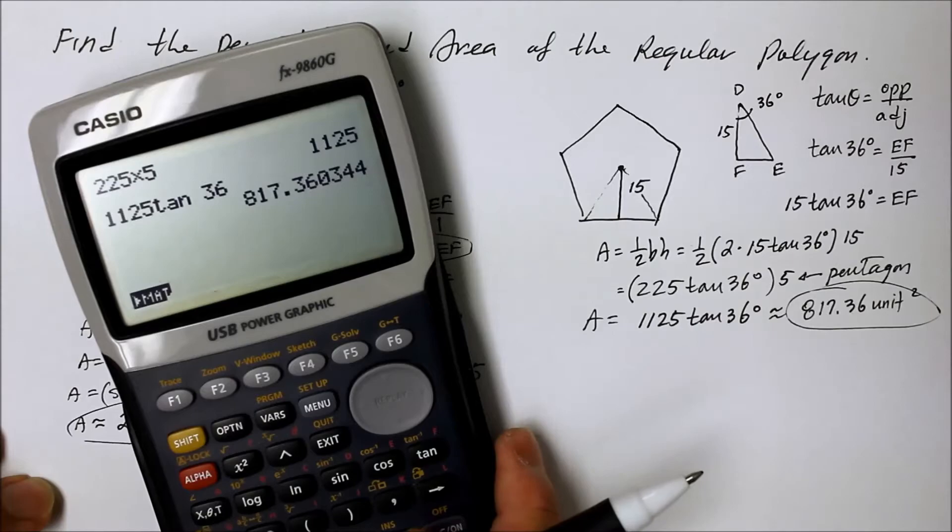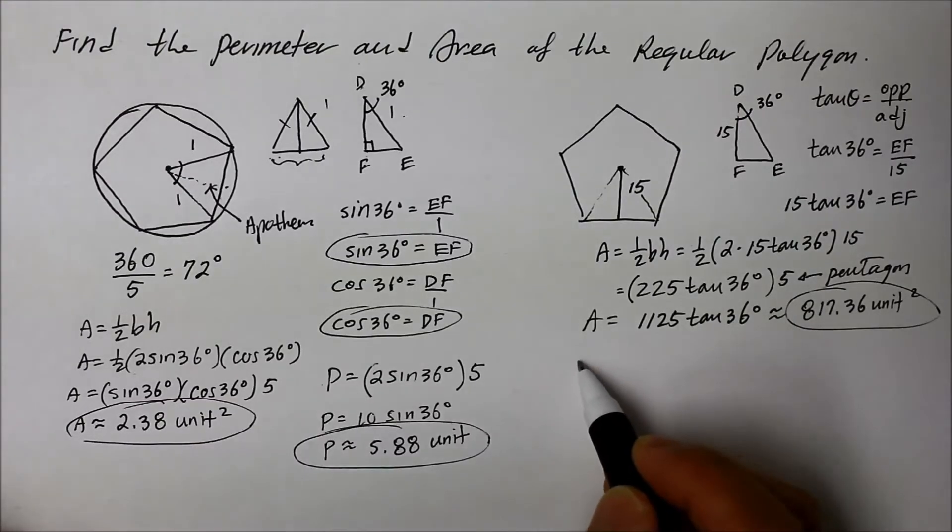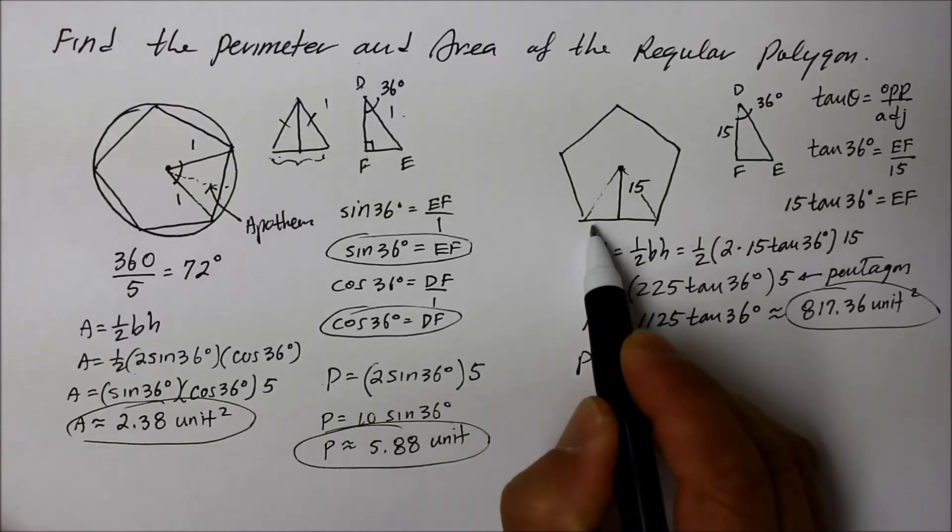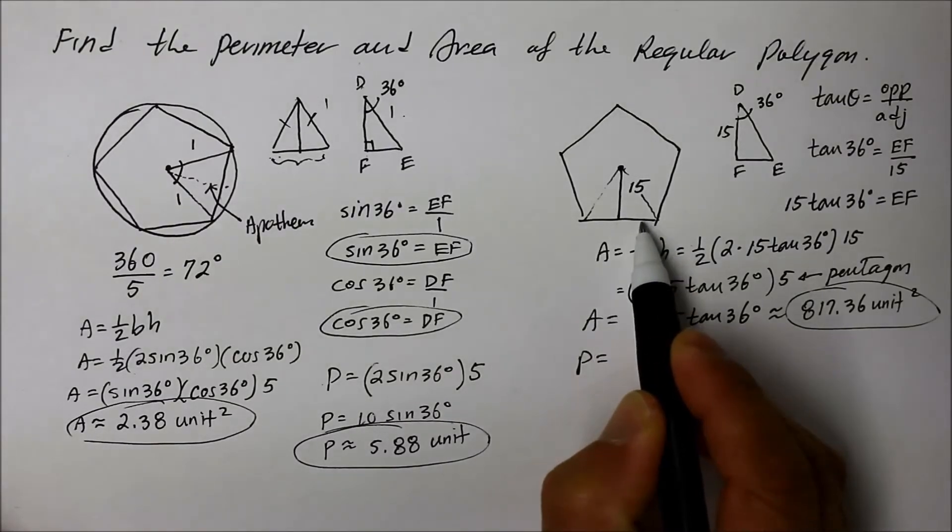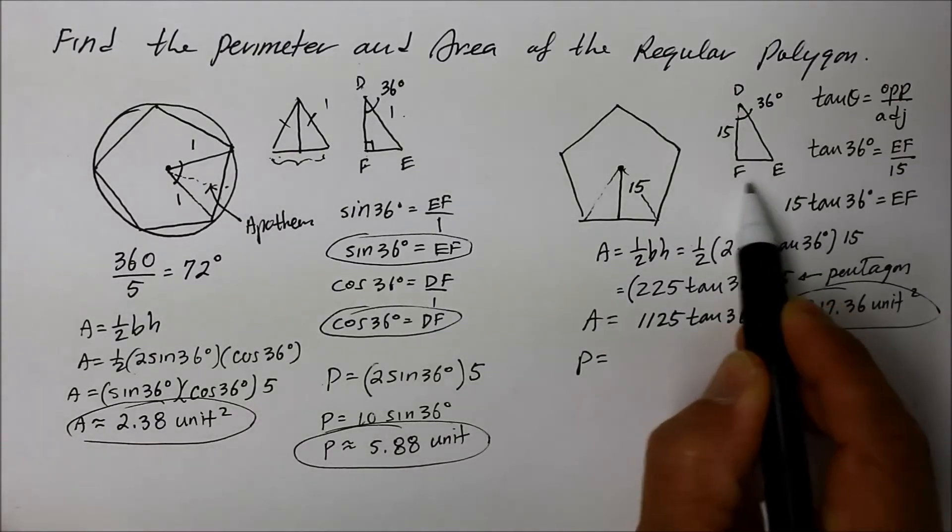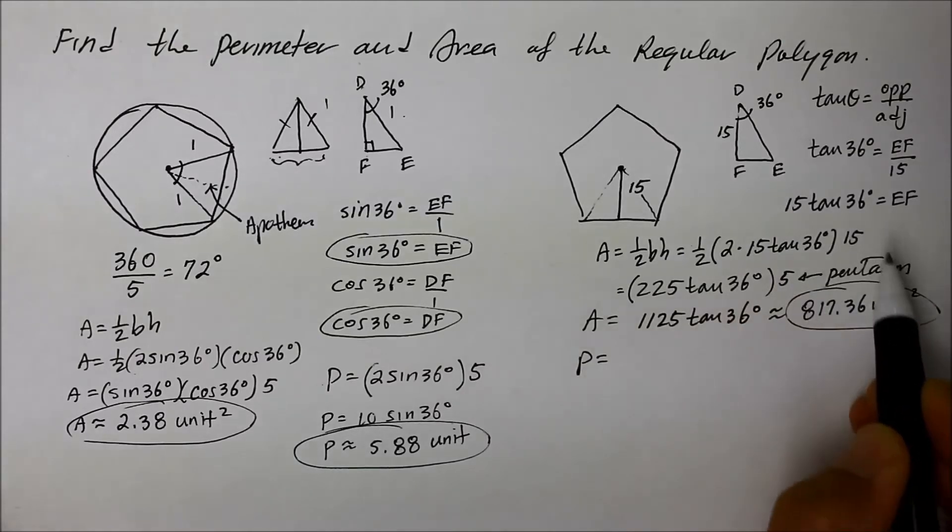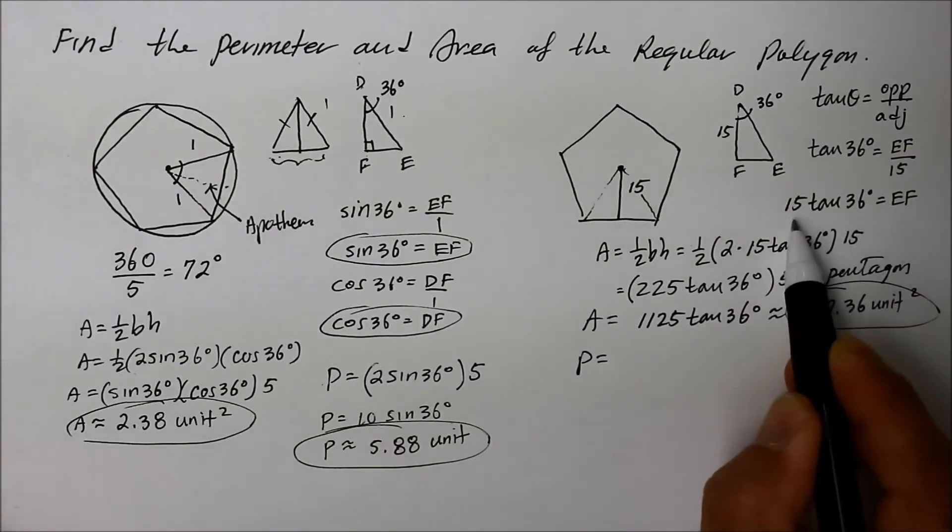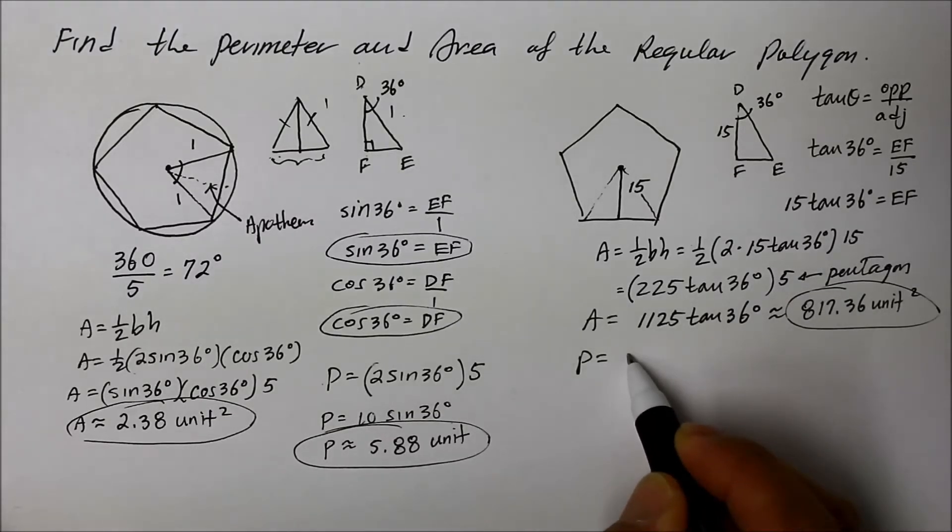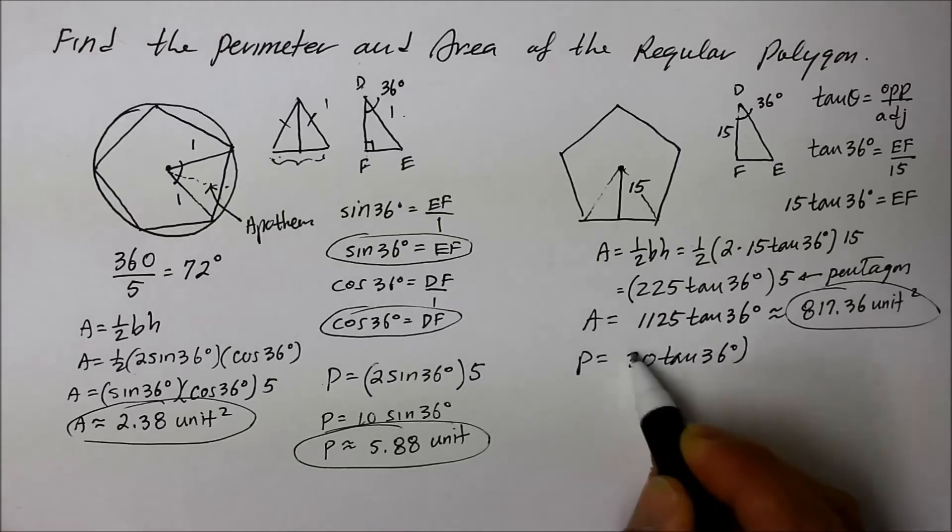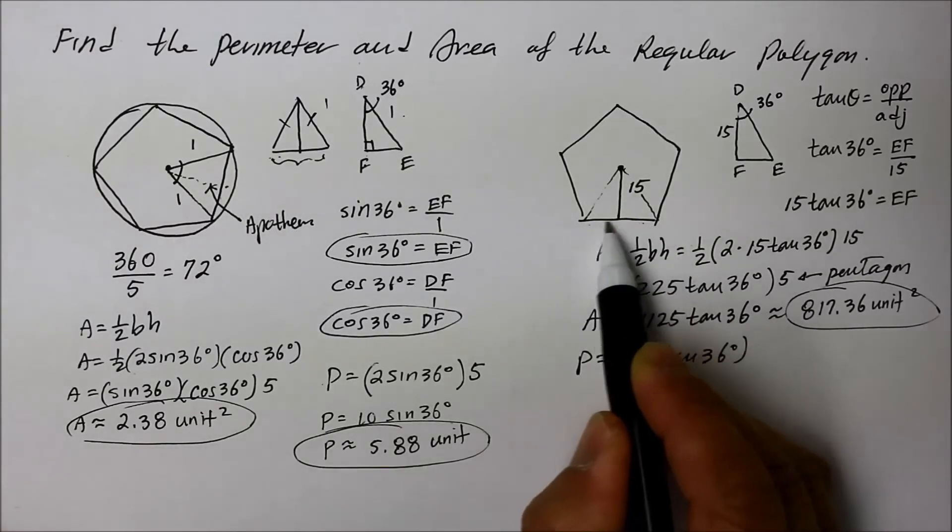How about the perimeter though? Alright, so for perimeter, what you want is to determine the base of that one isosceles triangle, which we said is double the vertices EF, the segment EF. So it's going to be double the 15 tan 36, so double the 15 is 30 tan 36 degrees. But that's just one base of this pentagon.